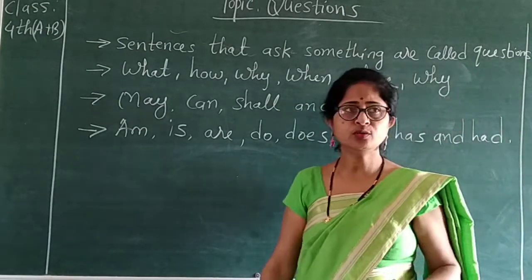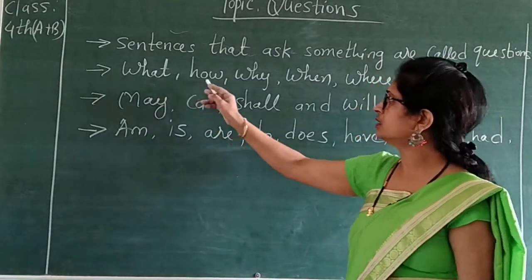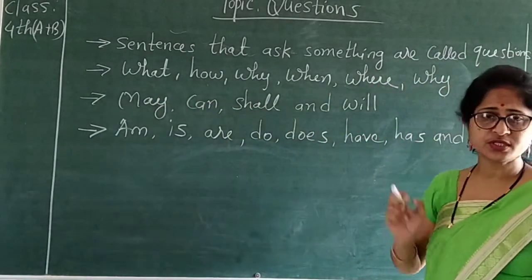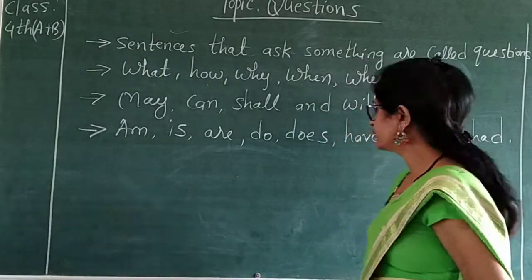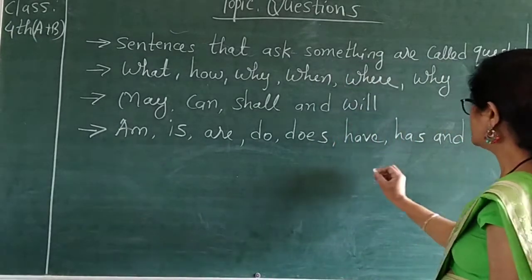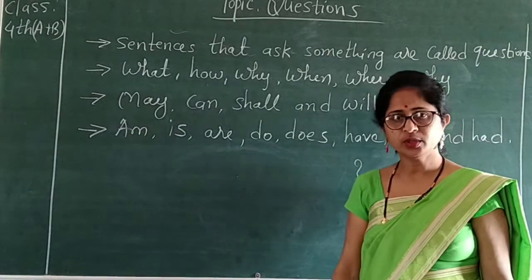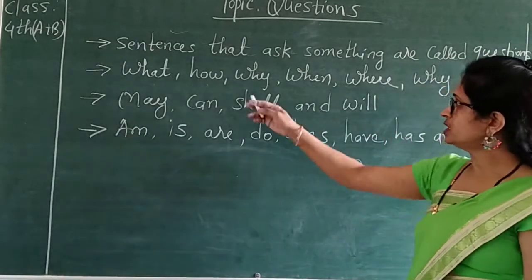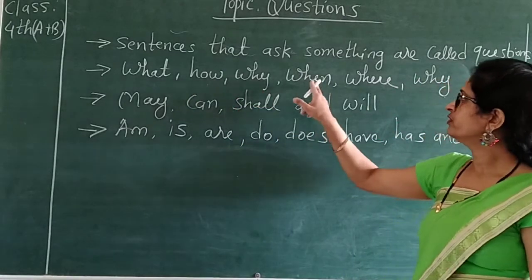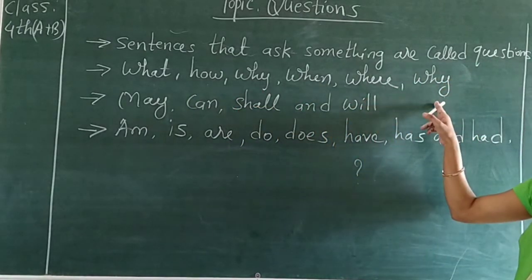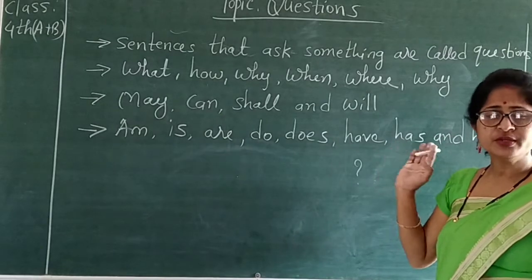One thing you have to remember is that all these words are there for asking questions — the first word is there. And how do we end the question? The question always ends with a question mark. So the words how, what, why, when, where — these are all the question-type first words.